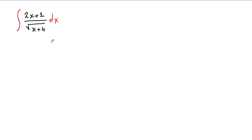In this video, we're going to integrate 2x plus 1 over square root of x plus 4. If you observe, this is a u-substitution integral. We have a square root argument here, so our u will be the argument inside of the square root: x plus 4.